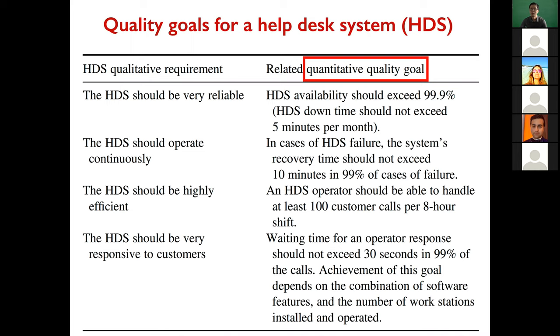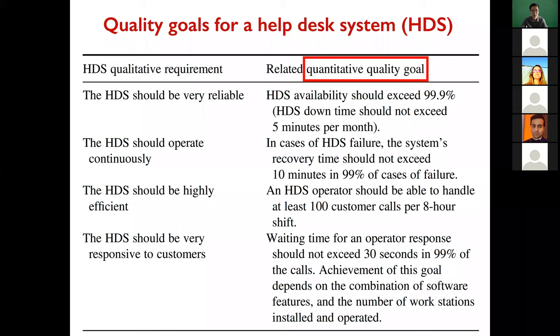That is a quantitative goal — it is easier to evaluate. For the qualitative requirement that the HDS should operate continuously, the quantitative counterpart is: in case of HDS failure, the system's recovery time should not exceed 10 minutes in 99% of cases of failure. That's easy to evaluate. So when we make quality plans and quality goals, we use quantitative requirements.